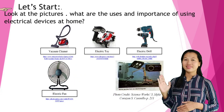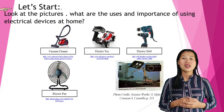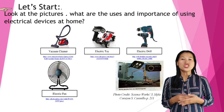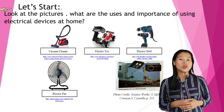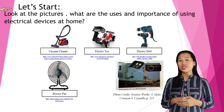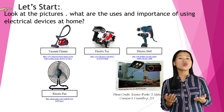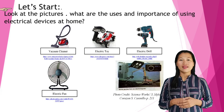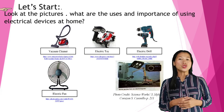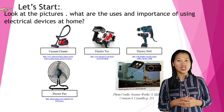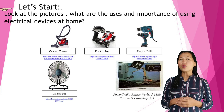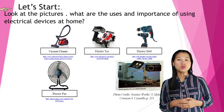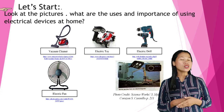Crane — cranes are types of machine generally equipped with a hoist rope, wire ropes or chains and sheaves, that can be used both to lift and lower materials and to move them horizontally.